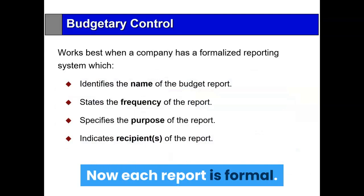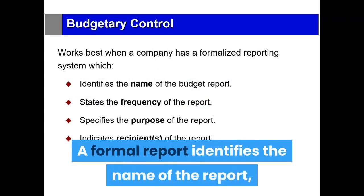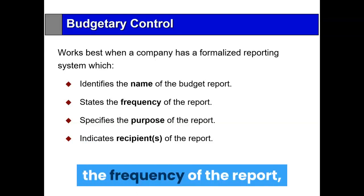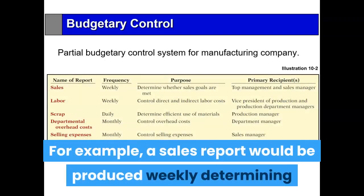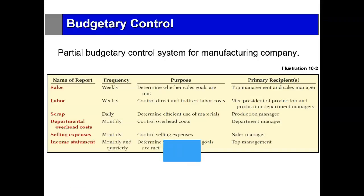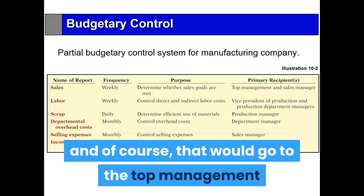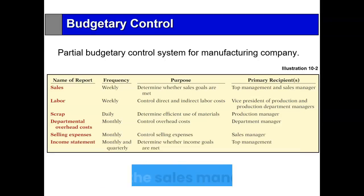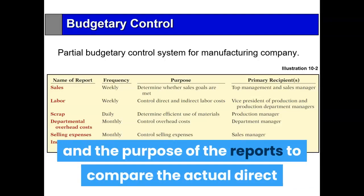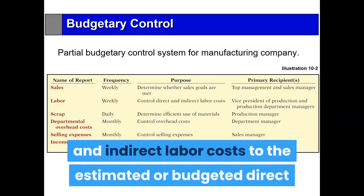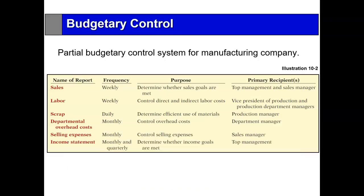Each report is a formal report that identifies the name of the report, the frequency of the report, the purpose of the report, and who is to receive it. For example, a sales report would be produced weekly, determining whether sales have been met, and that would go to top management and the sales manager. A labor report, again produced weekly, compares the actual direct and indirect labor costs to the estimated or budgeted direct and indirect labor costs, and that would go to the production manager.